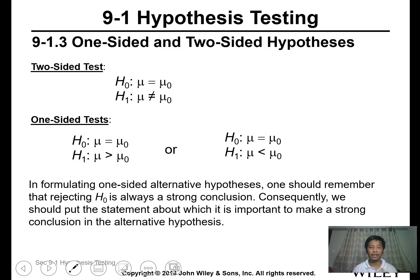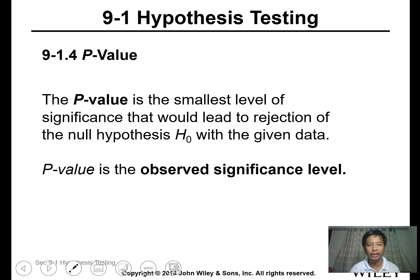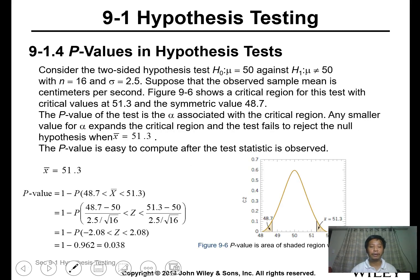For one-sided and two-sided hypothesis testing, the procedure is the same, but for one-sided it is just less than or greater than your mu. Another method of testing hypotheses is determining the p-value. The p-value is the smallest level of significance that would lead to the direct rejection of the null hypothesis — the observed significance level.